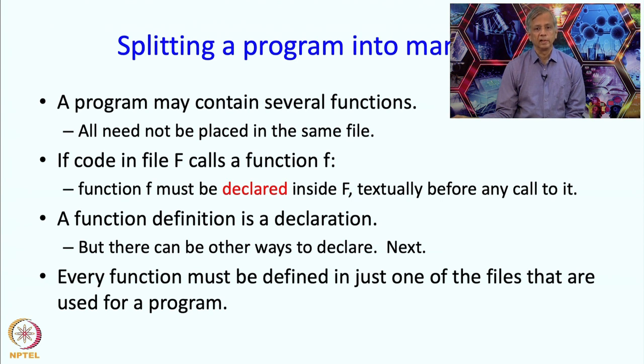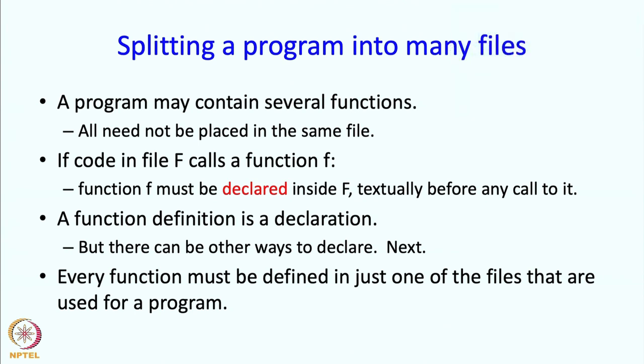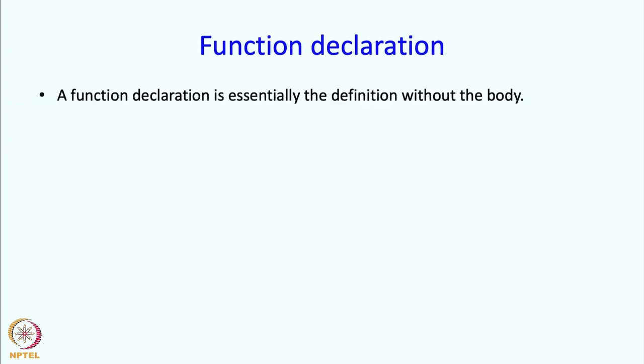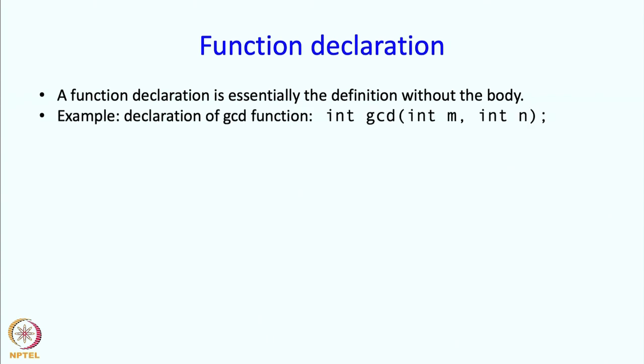Every function must be defined in just one of the files used for a program, but it must be declared in all the files that make a call to that function. A function declaration is essentially the definition without the body. So the declaration of the GCD function looks like: int gcd(int m, int n). After that you could have given the body, but that is omitted in a declaration.